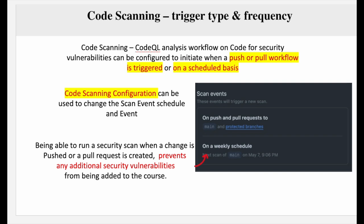Or you can run it on a scheduled basis — the default is weekly, provided by GitHub. Code scanning configuration would allow you to change the code scanning schedule as well as the event, but that is also the advanced option. If you decide to go the advanced path of writing your own YAML, that is definitely the path you can take.